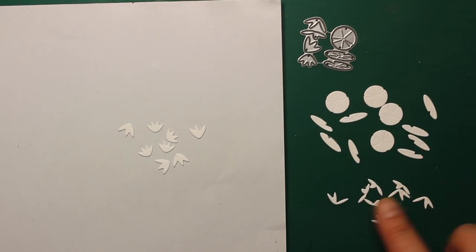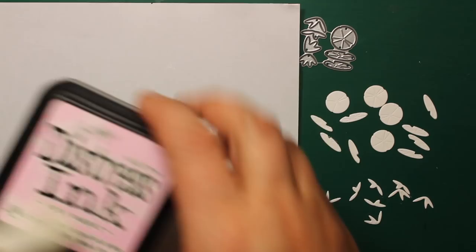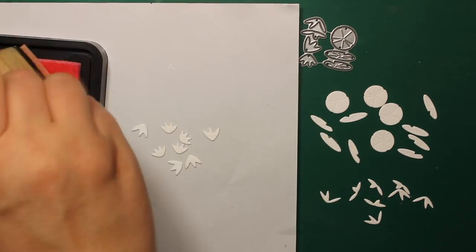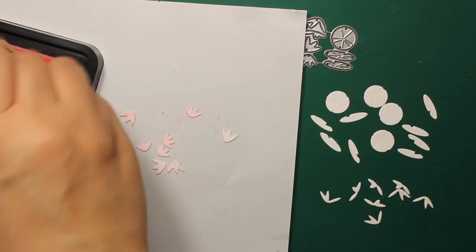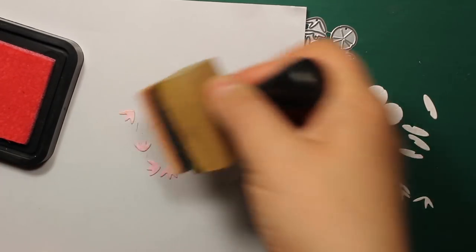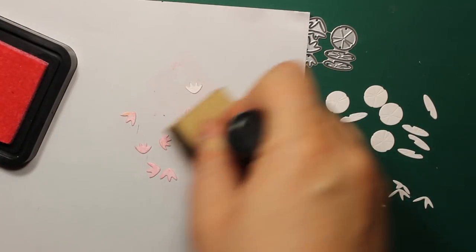And now to the water lilies. This tiny die set is Lovely Lily Pads by Poppy Stamps. I'm going to color the flowers pink with the Sponge Sugar Distress ink and leave all the other parts white.